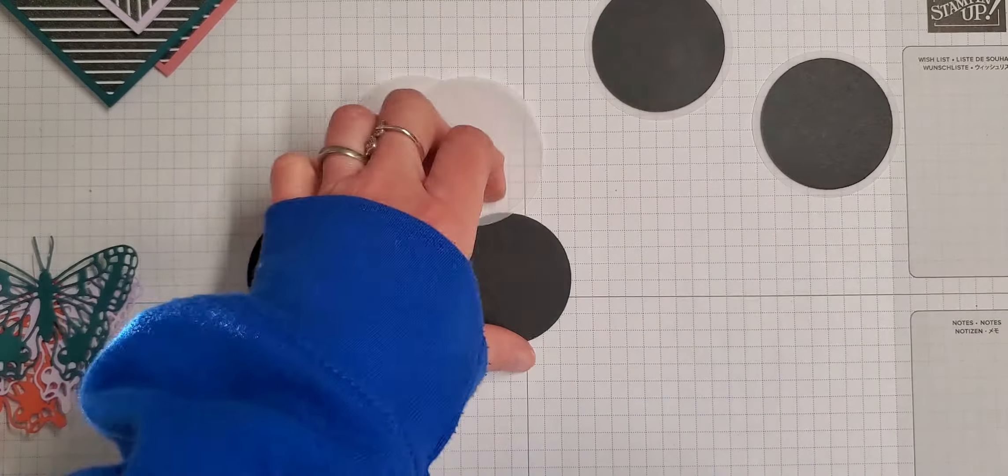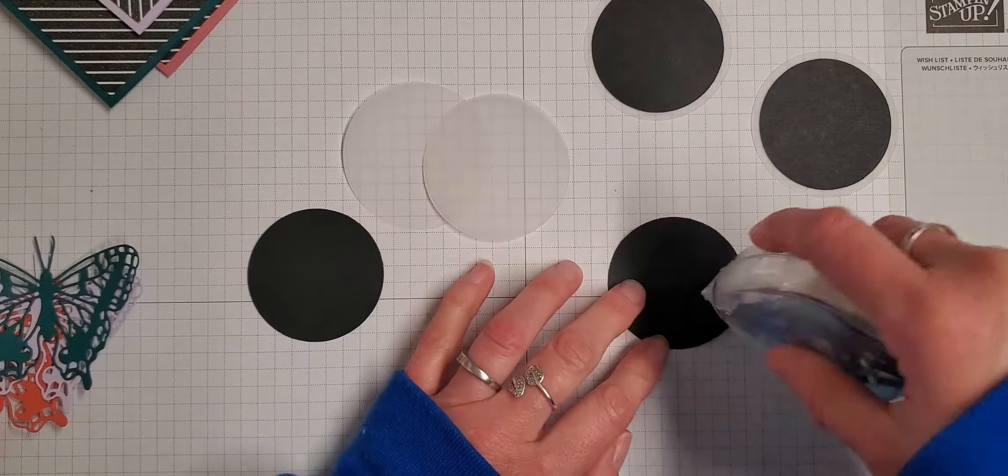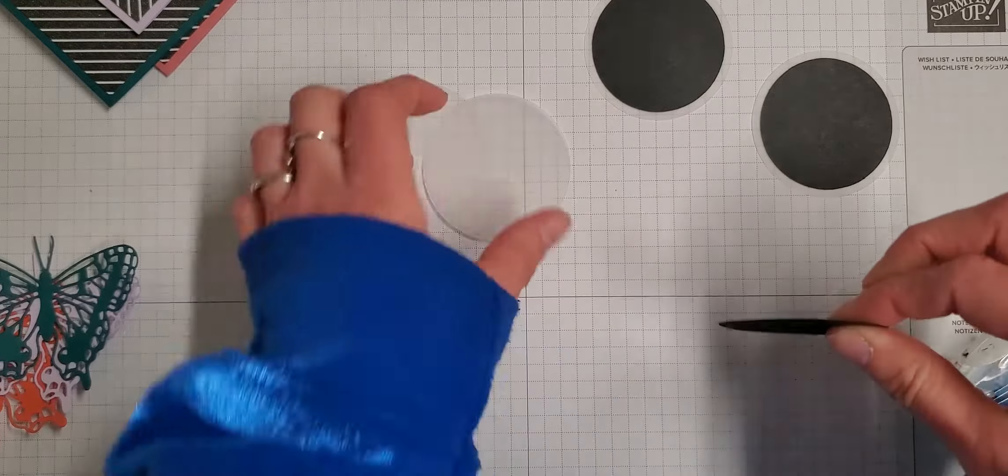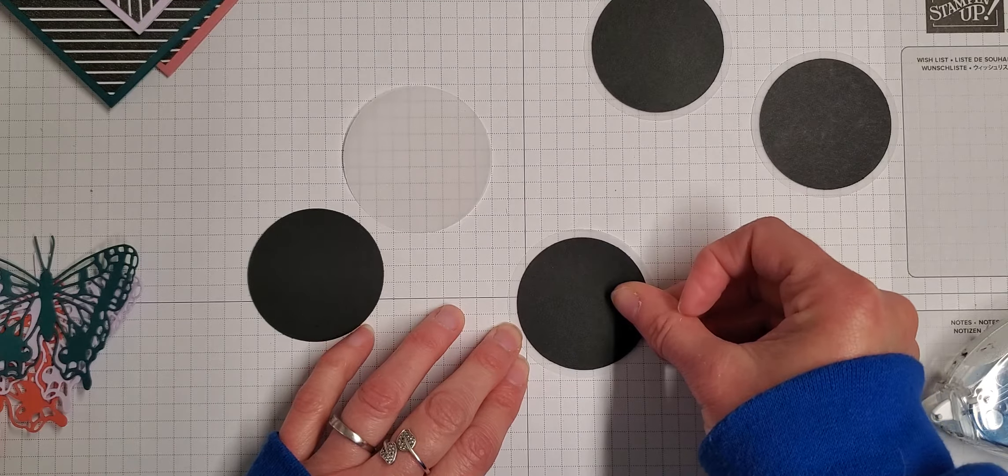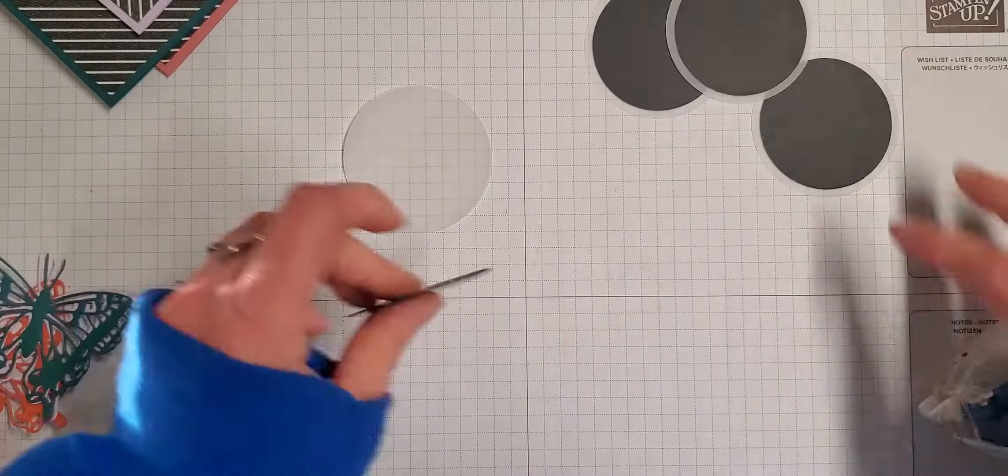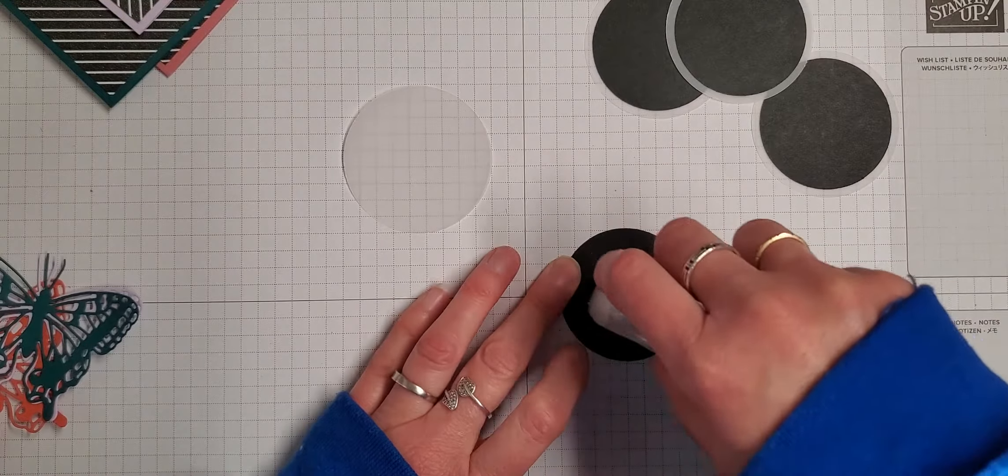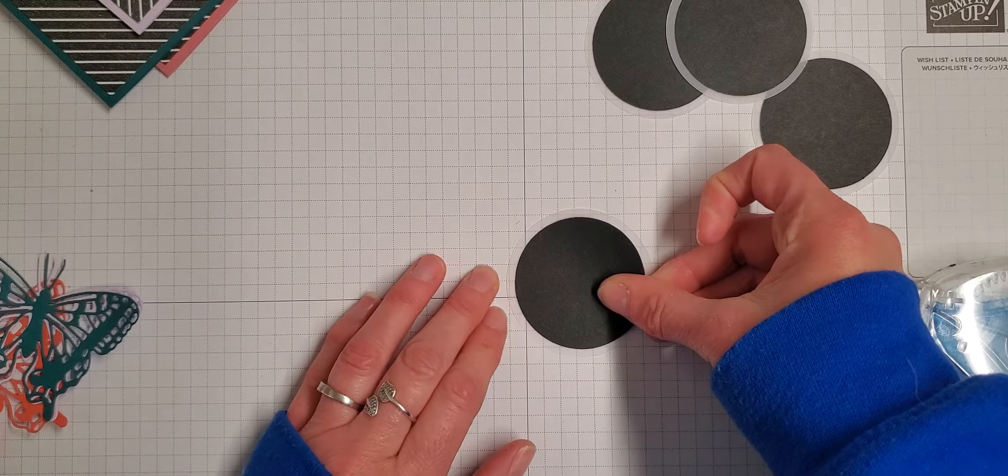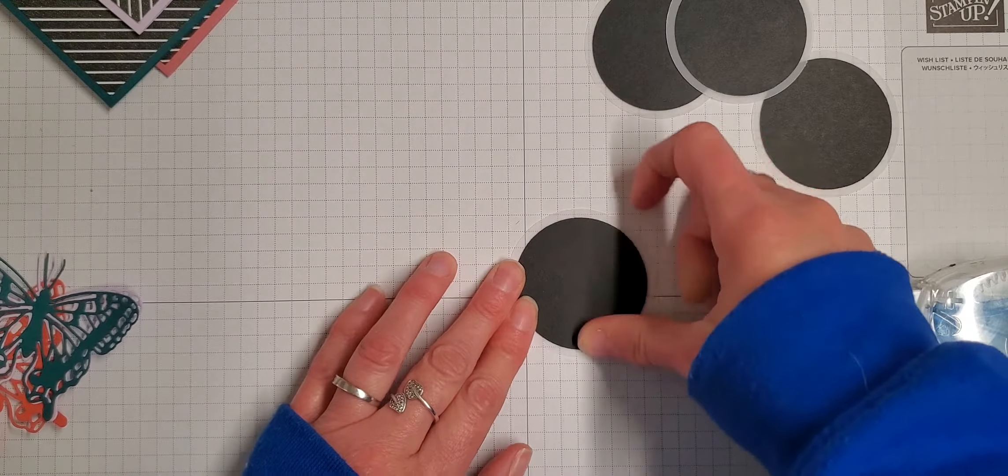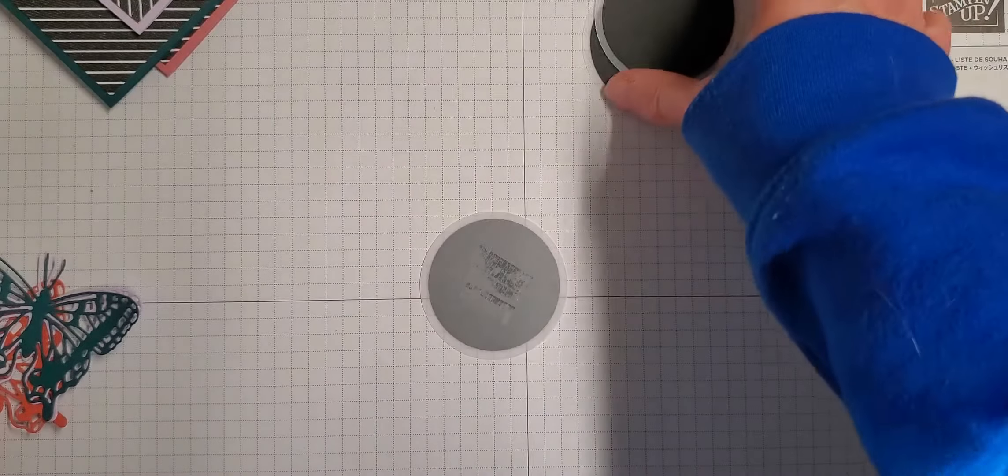Vellum is hard to get the circle centered on because I can't really see it all that well. It actually would help if I put it on a darker cardstock, but yeah, this will work. And then the last one for this, I'm going to attach these with some Stampin' Dimensionals.